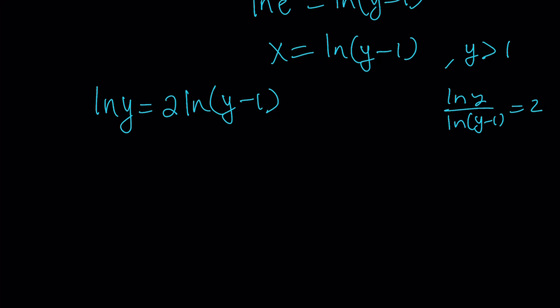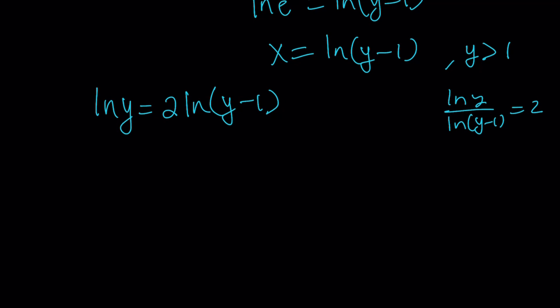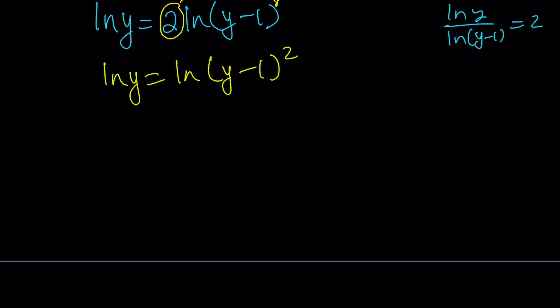You can use change of base, or you can also use power properties. So you can go ahead and move the power, and as long as y is greater than 1, like y - 1 is positive, this is good. This gives us ln(y) = ln((y - 1)²), because of the power rules. And from here we can safely drop the ln and just say y - 1 squared should equal y. If you expand, you get y² - 2y + 1 = y. And if you subtract y,